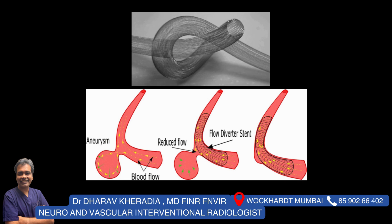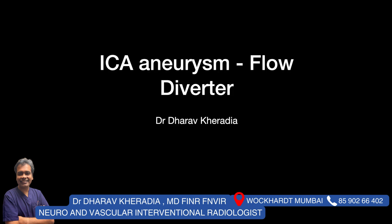So suppose this is the blood vessel which is having an aneurysm — we put a flow diverter stent in the parent artery like this, and it will divert flow away from the aneurysm. Over a period of time, this aneurysm will shrink. So this is the basic concept of the flow diverter.